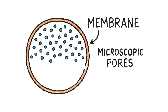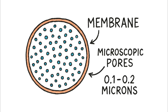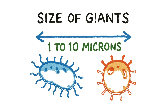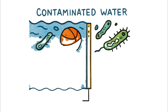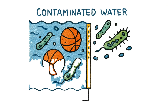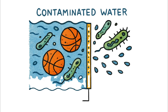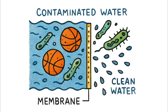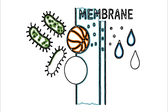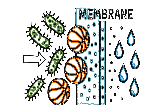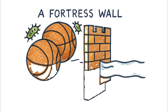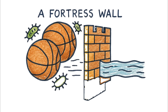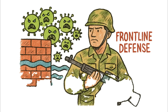It's not going to happen — the basketball is physically too large to pass through the holes in the net. That's precisely how these filters operate. Inside them is a membrane filled with microscopic pores, typically around 0.1 to 0.2 microns in diameter. Remember the size of our Giants? 1 to 10 microns. When contaminated water is forced through this membrane, the water molecules slip right through, but the bacteria and protozoa — our basketballs — are physically blocked. It's a brilliant and effective piece of physics, a fortress wall that keeps the Giants at bay, delivering clean, drinkable water out the other side.